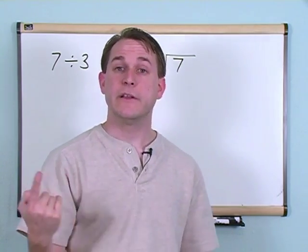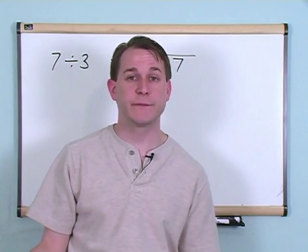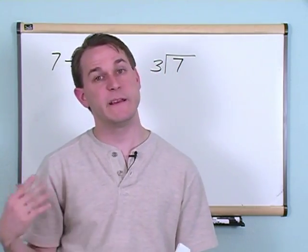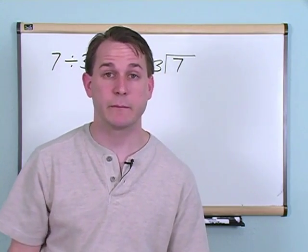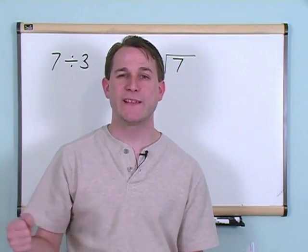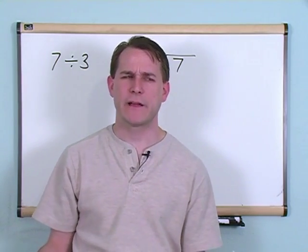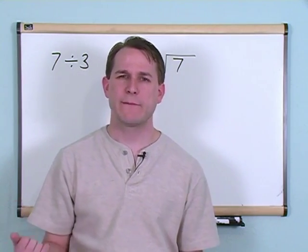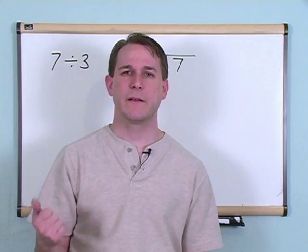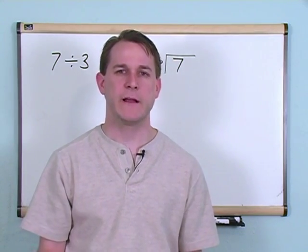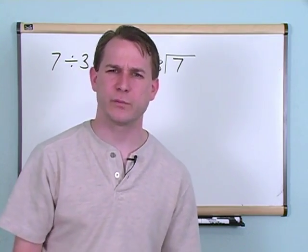Three times one is three. That's not right because we're looking for seven. Three times two is going to give me six, but that's not right because I'm looking for seven. Three times three is going to give me nine. That's not right because I'm looking for seven. You see you have a problem here because three times two is six, so that doesn't really work, and three times three is nine and that doesn't really work.